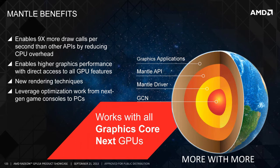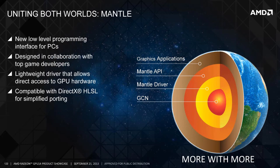The problem is most modern GPUs can handle far more draw calls than can be submitted by modern CPUs, so you get basically a bottleneck. AMD has claimed that Mantle can process and direct upwards of nine times the amount of draw calls as DirectX. This would be a massive improvement over current APIs.